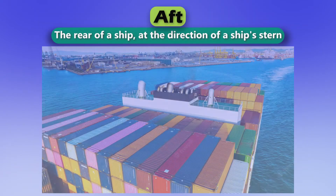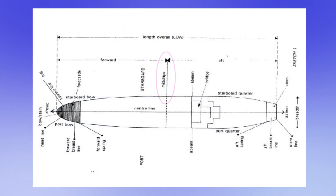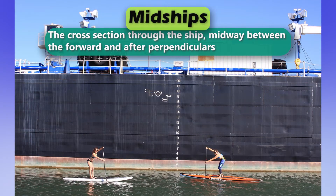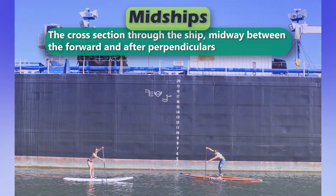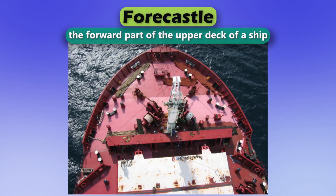Aft: the rear of a ship, at the direction of a ship's stern. Midships: the cross section through the ship, midway between the forward and after perpendiculars. Forecastle: the forward part of the upper deck of a ship.